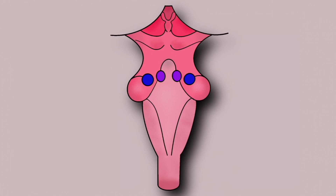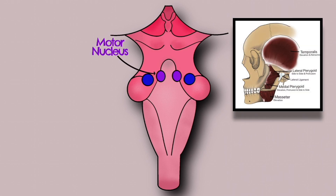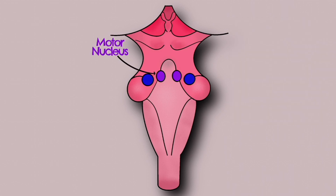Let's identify the nuclei. The motor nucleus is found centrally in the pons. It exits the pons following the mandibular branch of the trigeminal. Its most important function is innervating the muscles of mastication: masseter, temporalis, medial and lateral pterygoid. It also innervates tensor tympani found in the middle ear, tensor veli palatini, mylohyoid, and the anterior belly of digastric.